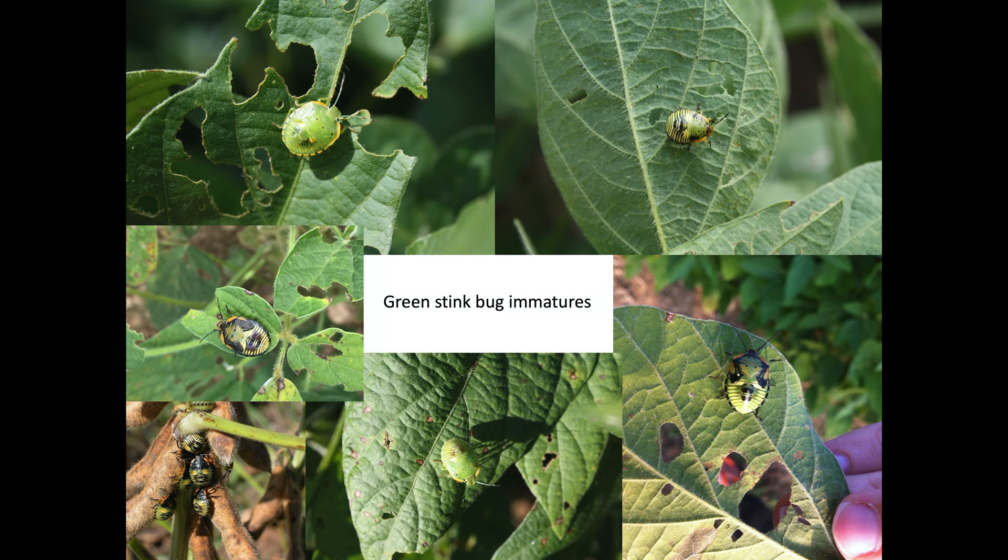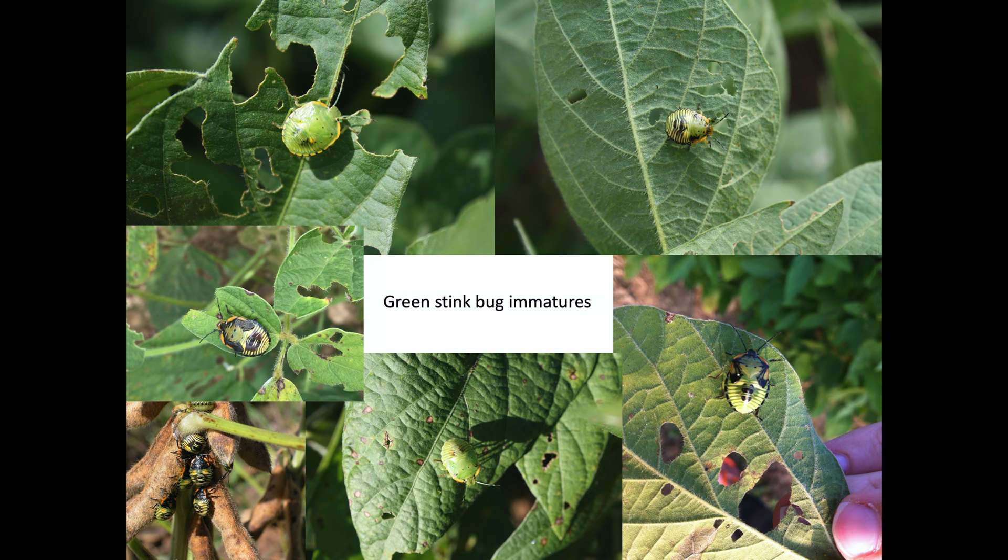Immatures go through several instars and the color pattern varies as they grow from one instar to another. We need to be able to recognize the various color stages of immature stink bugs because all stages count toward the treatment threshold, whether immature or adult. These are all pictures of green stink bug immatures.